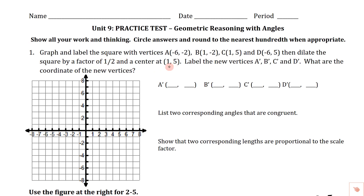If we get lucky, (1, 5) is going to be one of the vertices of the square. Let's take a look — yes, we're going to be using C as the center of dilation. We're going to label the new vertices with prime notation, say what they are, and then answer a couple of questions.